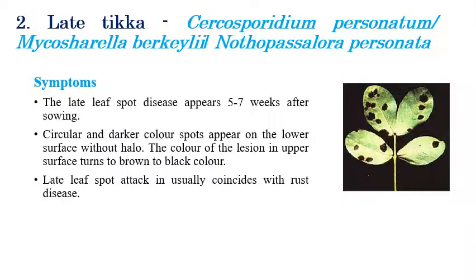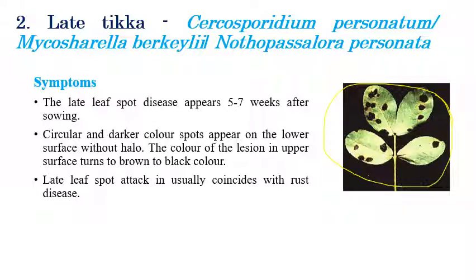Late Tikka is caused by Cercosporidium personatum or Mycosphaerella berkeleyi, with the new name being Nothopassalora personata. Symptoms are predominantly seen on the lower surface. Whereas Early Tikka occurs three to four weeks after sowing, Late Tikka appears five to seven weeks after sowing. Dark reddish or brown spots are seen on the lower surface.